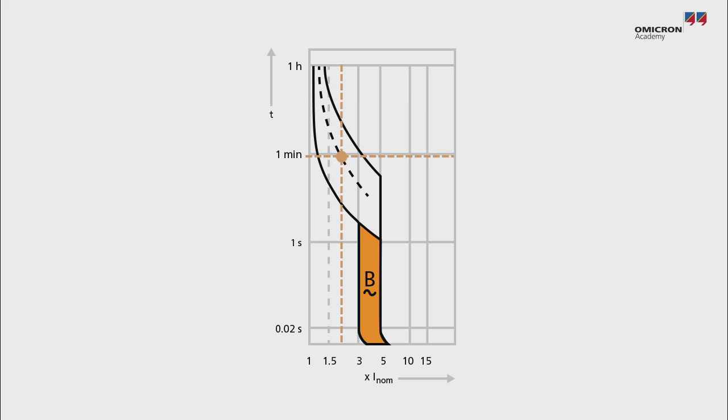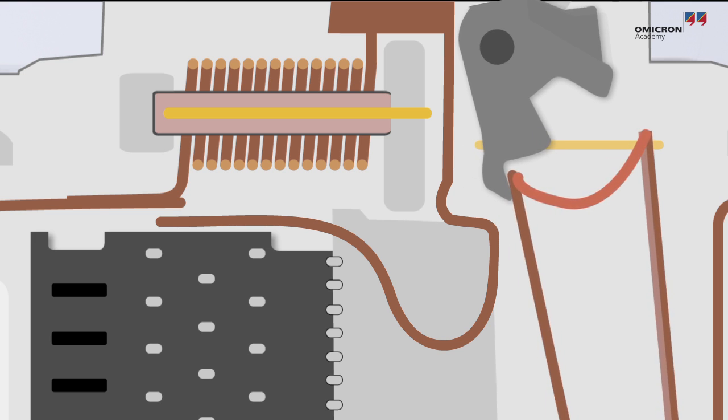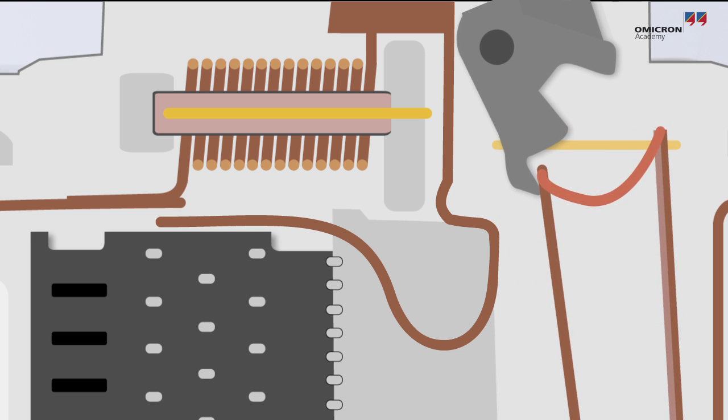The higher the amplitude of the overcurrent, the faster an MCB must trip. This is achieved with a metallic element consisting of two different metals, which are heated up by the current flow. The two metals are expanding at different rates while they're heating up. An overcurrent that is present long enough will eventually activate the braking element.